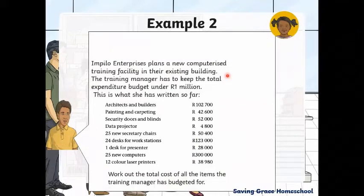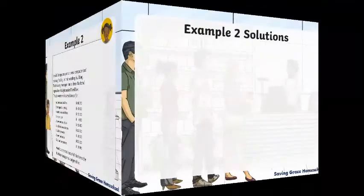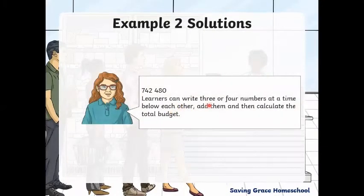Example 2: Impedo Enterprises plans a new computerized training facility in the existing building. The training manager has to keep the total expenditure budget under 1 million rand. This is what she has written so far: architects and builders, painting and carpeting, security doors and blinds, and so on. The question is: work out the total cost of all the items the training manager has budgeted for. So what they're asking us is to essentially add all of these. Learners can write three or four numbers at a time below each other and add them, and then calculate the total budget.